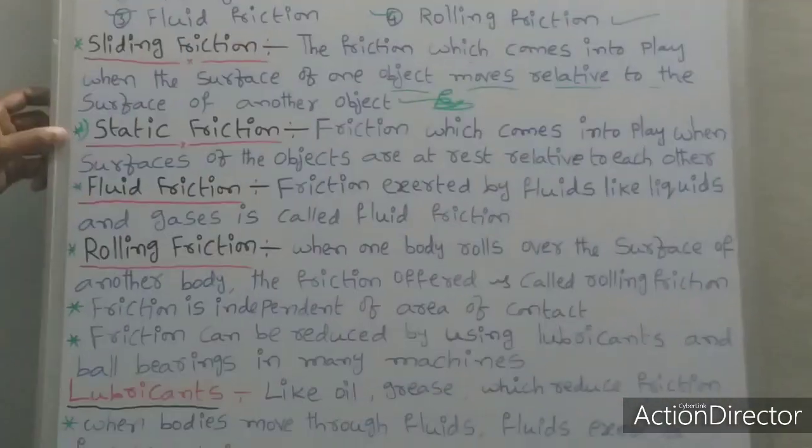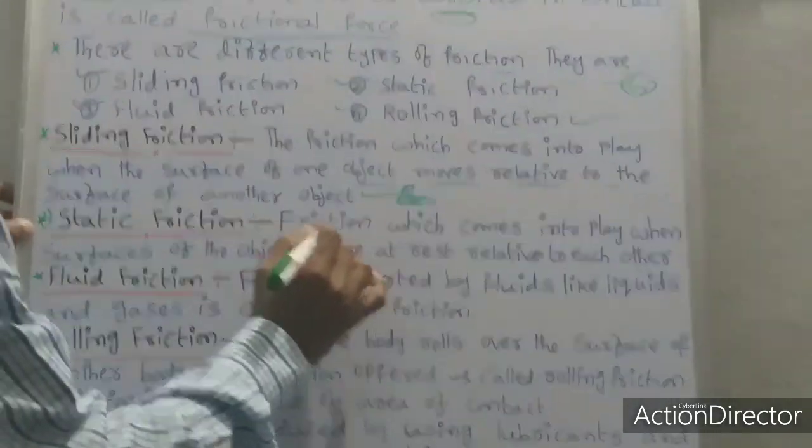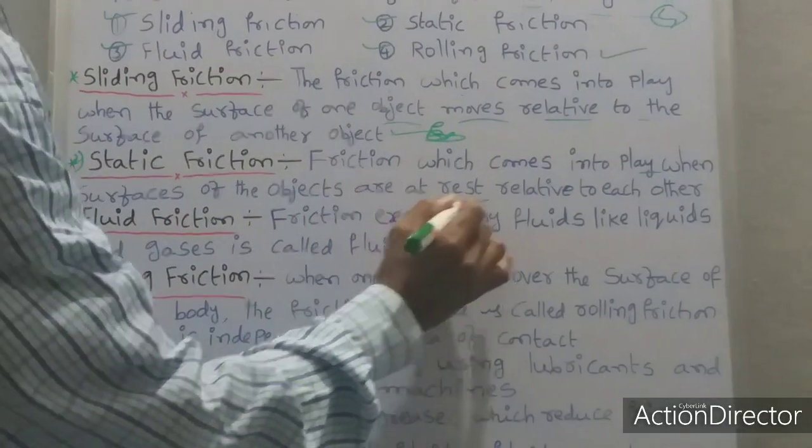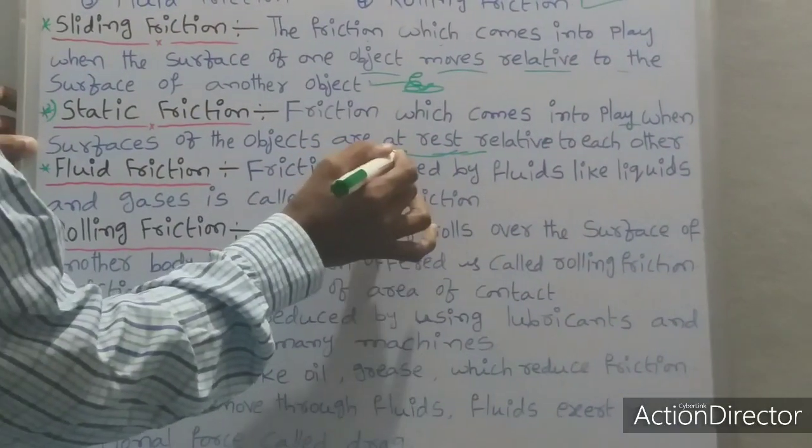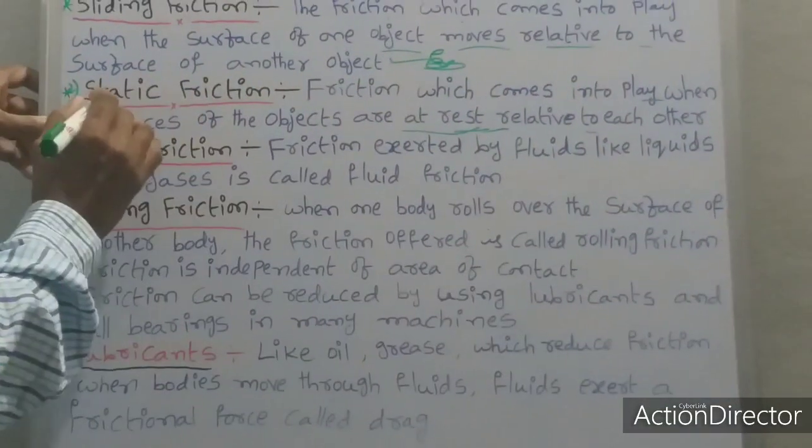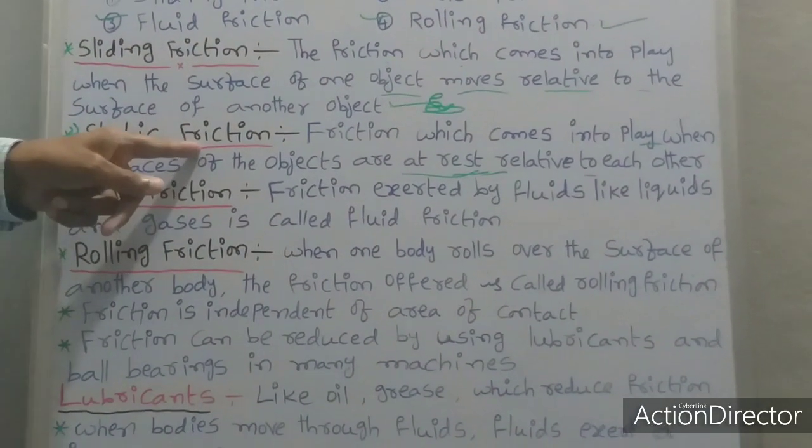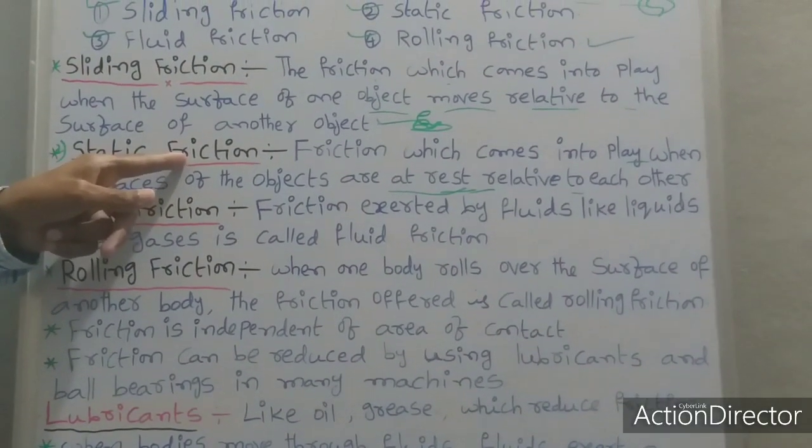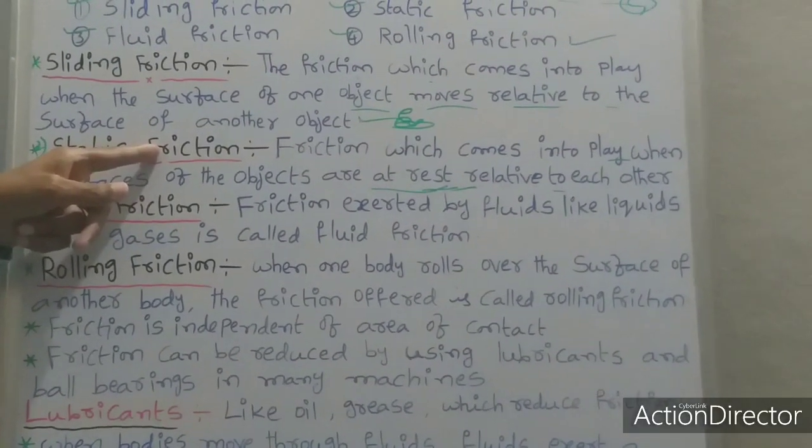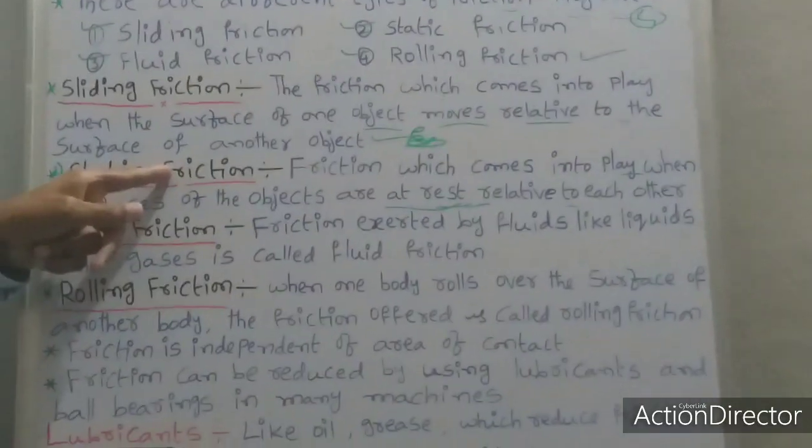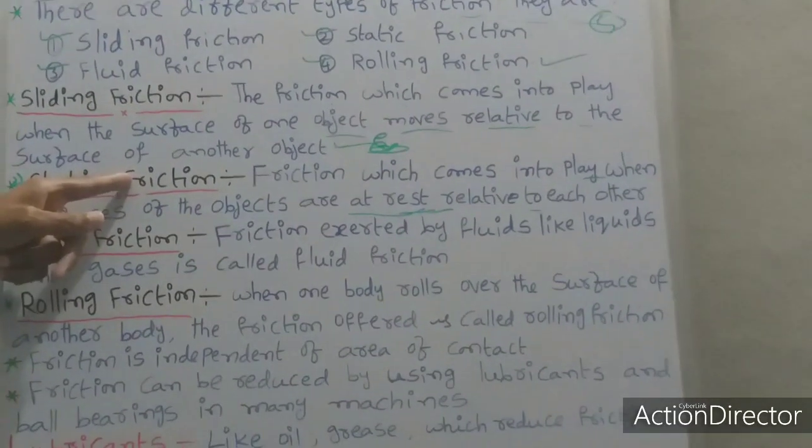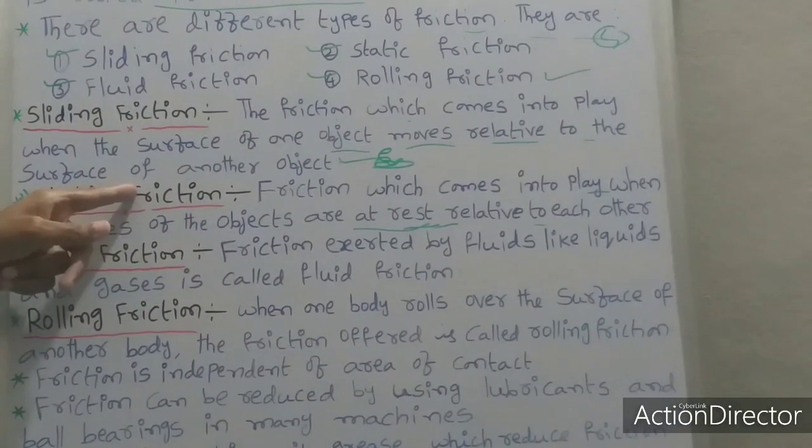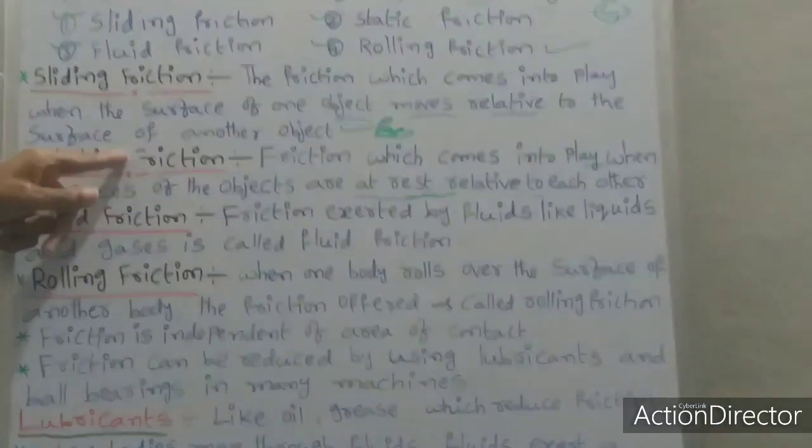Second one students, static friction. Definition: friction which comes into play when surfaces of the object are at rest relative to each other. That is called static friction. Static friction example students: we are applying force on a big rock but unable to move the rock due to its static friction.